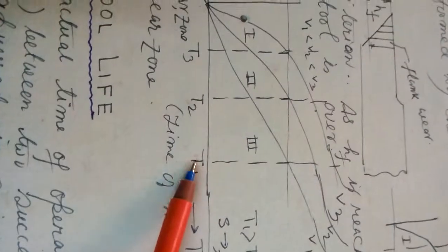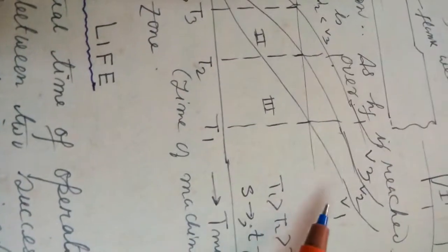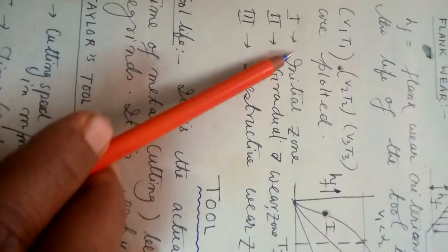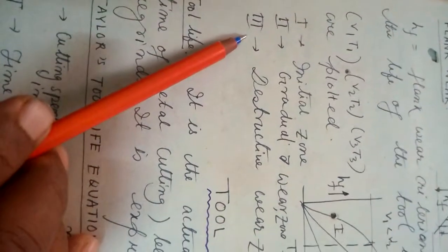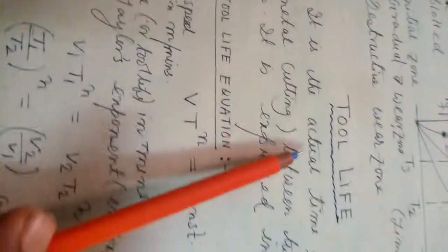You see HF in this direction versus time in minutes T1, T2, T3 for velocities V1, V2, and V3. T1 greater than T2 greater than T3. First one is initial zone, second one is gradual wear zone, third one is destructive wear zone. Here in this zone it is most dangerous.